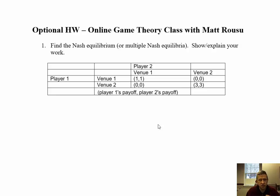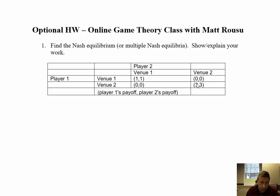At what outcomes would nobody have an incentive to change given the other player's choice? In this game, there are two Nash Equilibria — either of the outcomes where both players go to the same venue. If they both go to venue two, they each get a payoff of three, and neither would want to switch because they'd go from a payoff of three to zero. So that is a Nash Equilibrium. Both going to venue one is also a Nash Equilibrium.